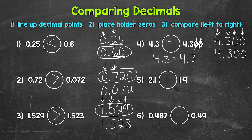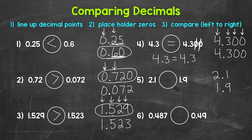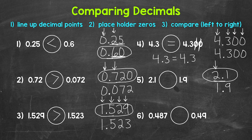Let's move on to number five, where we are comparing 2 and 1 tenth and 1 and 9 tenths. Both go to the tenths place, so no placeholder zeros needed. Comparing digits from left to right, we start with the ones place where we have a 2 and a 1. This is an important example — don't skip the whole numbers and go straight to the decimals. We do have a difference: 2 is greater than 1, so 2 and 1 tenth is greater than 1 and 9 tenths.